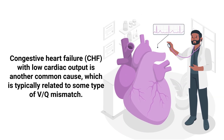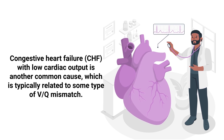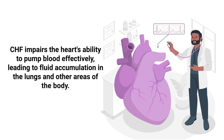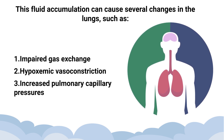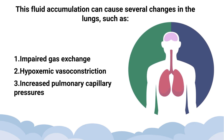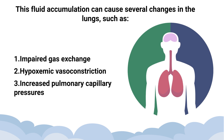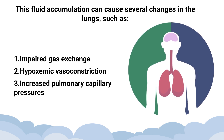Congestive heart failure with low cardiac output is another common cause, typically related to VQ mismatch. CHF impairs the heart's ability to pump blood effectively, leading to fluid accumulation in the lungs and other areas of the body. This fluid accumulation can cause several changes in the lungs, such as impaired gas exchange, hypoxemic vasoconstriction, and increased pulmonary capillary pressures.